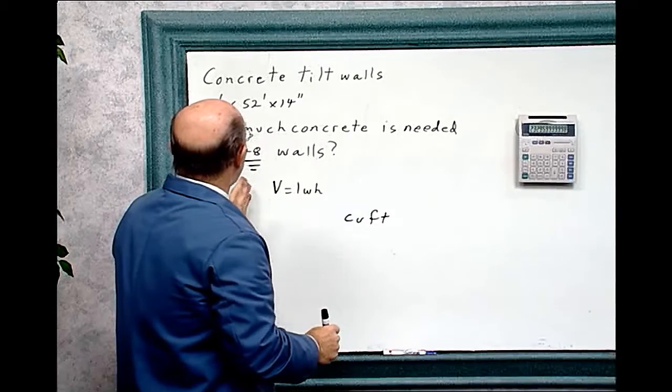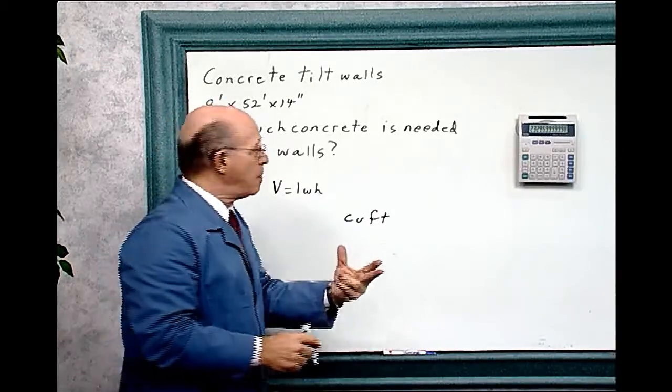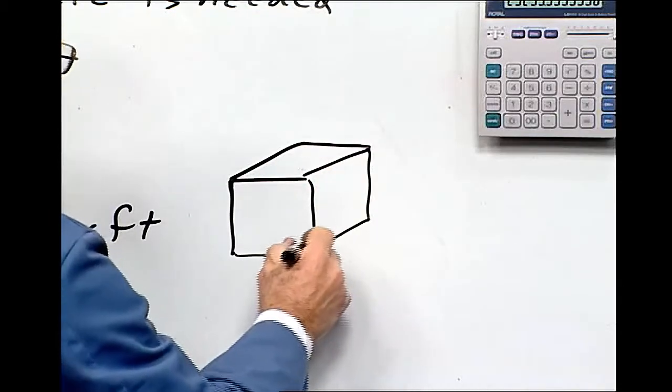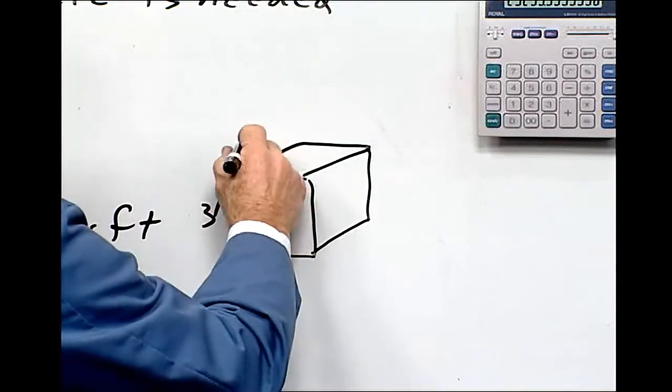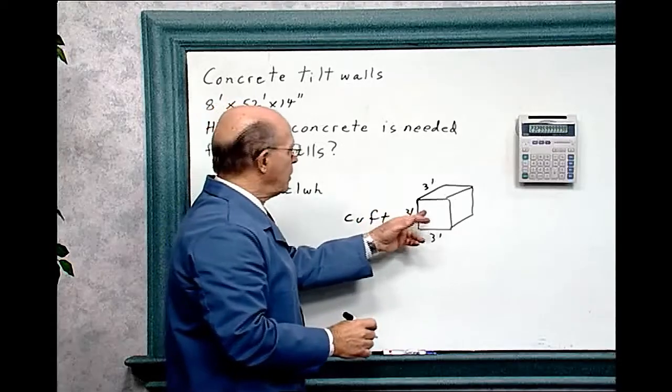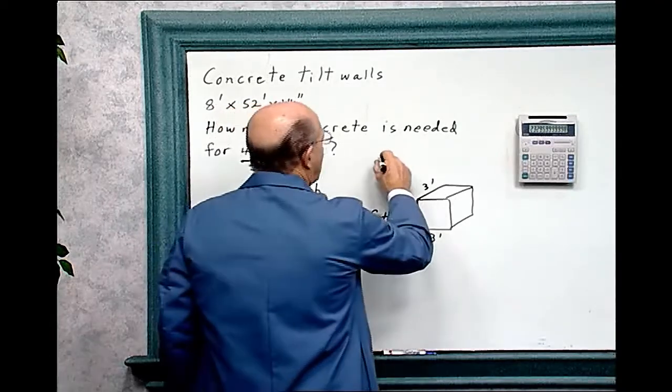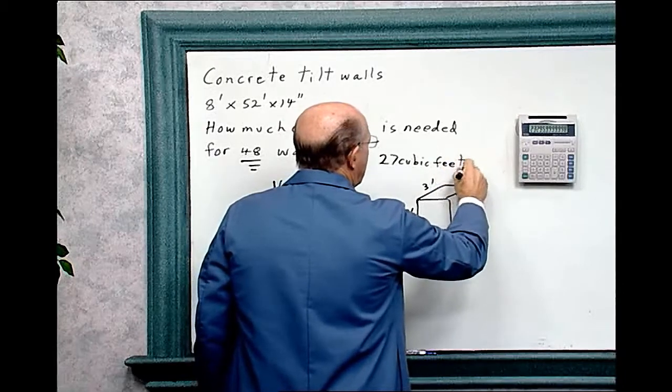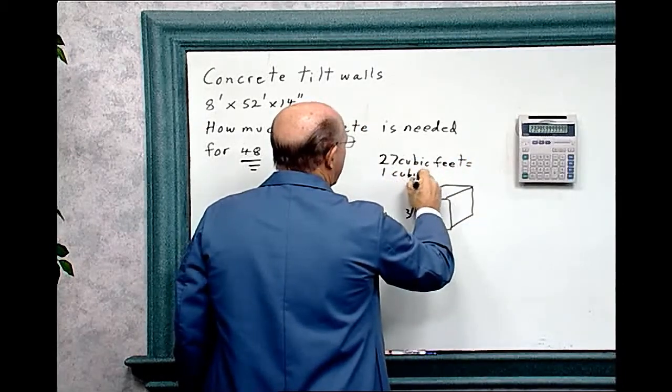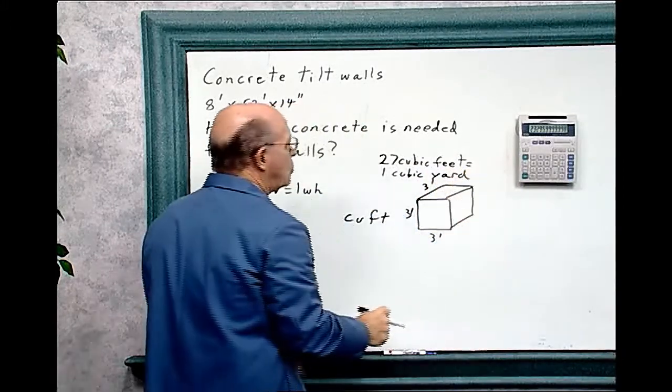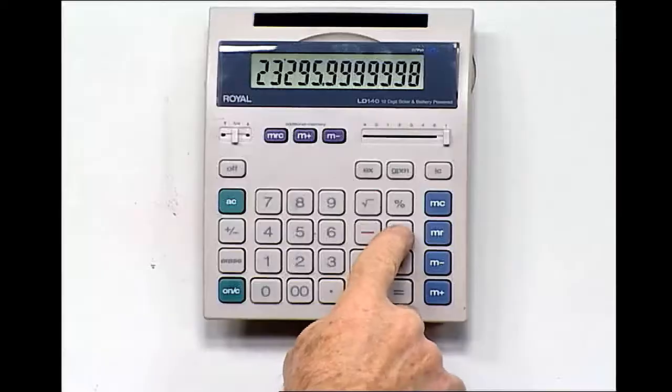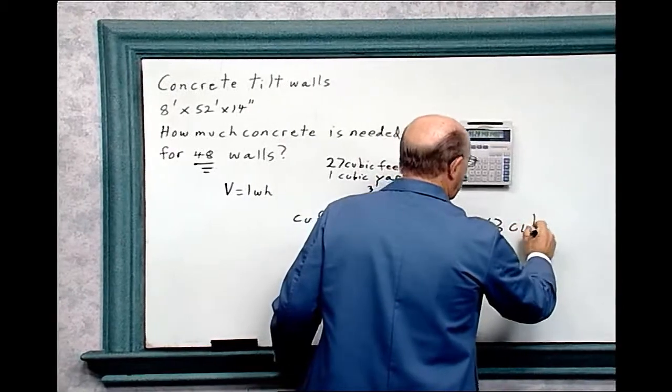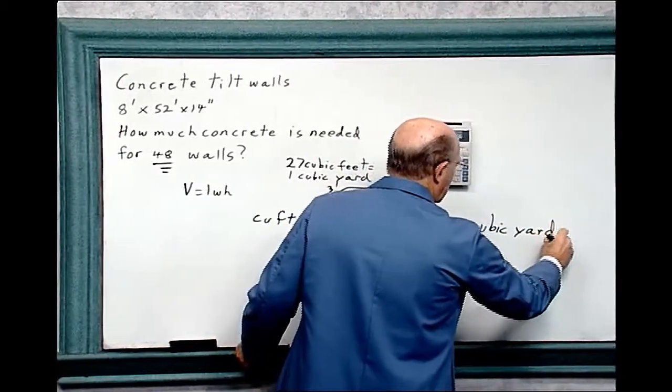Now, we want to know how much concrete is needed, and it's usually always done in yards. They always measure concrete in yards. A cubic yard measures 3 foot by 3 foot by 3 foot. So 3 times 3 is 9 times 3 is 27 cubic feet equals 1 cubic yard. So we divide that number by 27. To build those 48 tilt walls, you need 863 cubic yards of concrete.